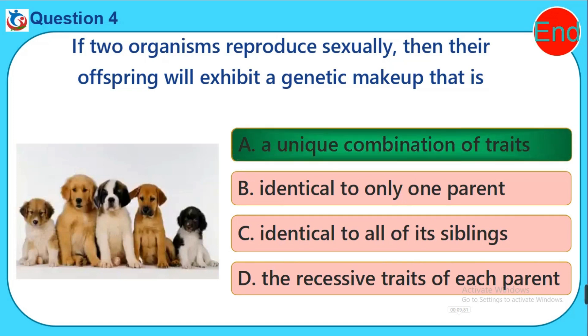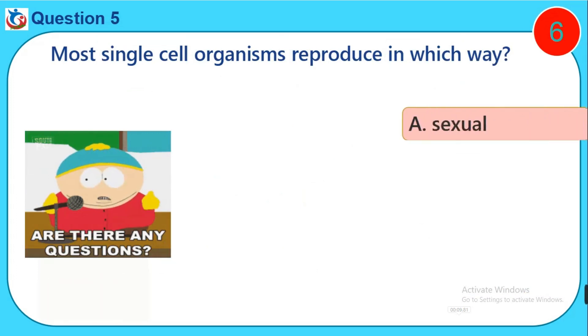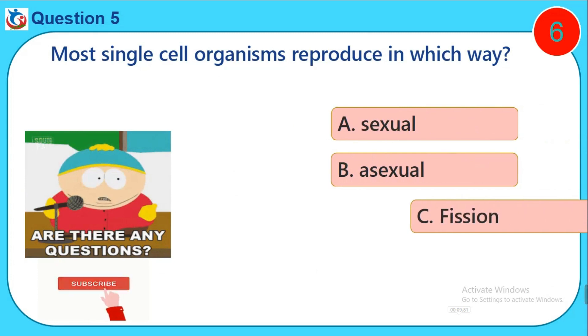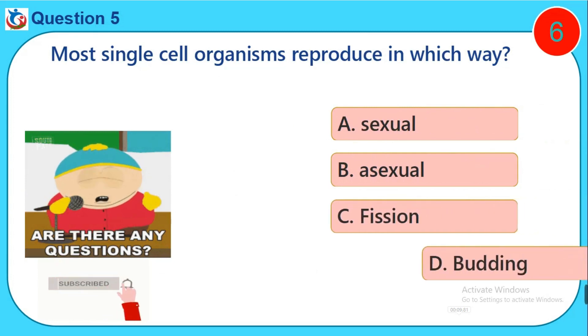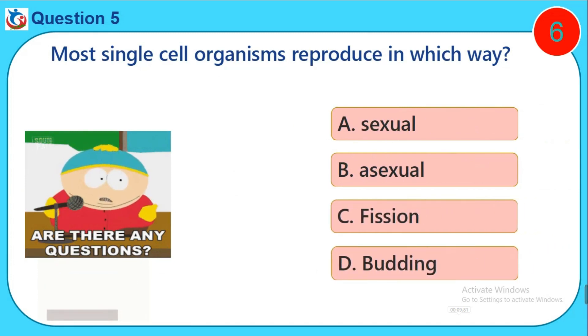Question five: Most single-cell organisms reproduce in which way? A) Sexual, B) Asexual, C) Fission, D) Budding.